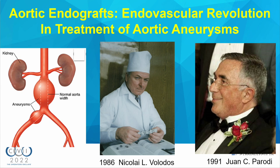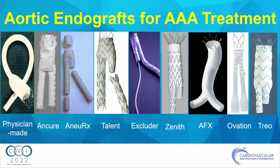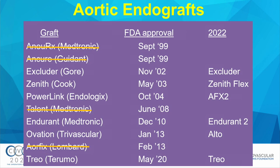Endografts were separately developed in Ukraine by Dr. Volodos and in Argentina by Dr. Parodi, to be applied to treatment of abdominal aortic aneurysms. There are many endografts available in the United States — these are all the grafts that have been at some point or are currently available. You can see when the grafts were approved by the FDA; some are no longer on the market, and some have been developed into new models.